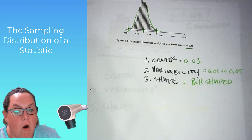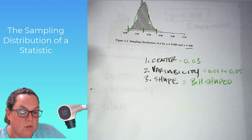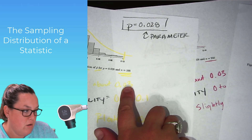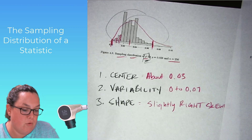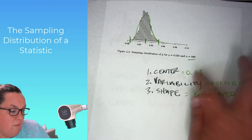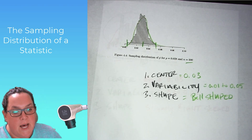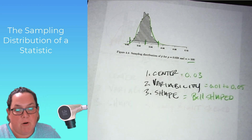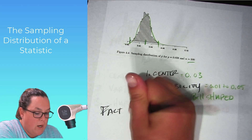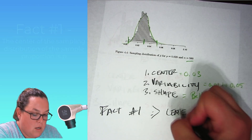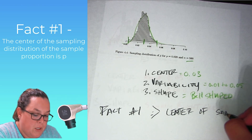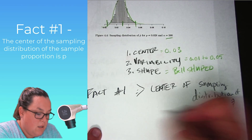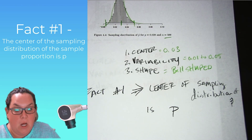So what are some things we're noticing overall? Starting with the center: from 100, we had a center of about 0.03; from 250, a center of about 0.03; and from the 500 sampling distribution, a center of about 0.03. The trend is that for these sampling distributions, all of our centers are about 0.03, which is our parameter value. That's the first fact: the center of the sampling distribution of p-hat is p. That's huge — if you're using p-hat to estimate p, it's great to know that p-hat naturally centers itself around p.